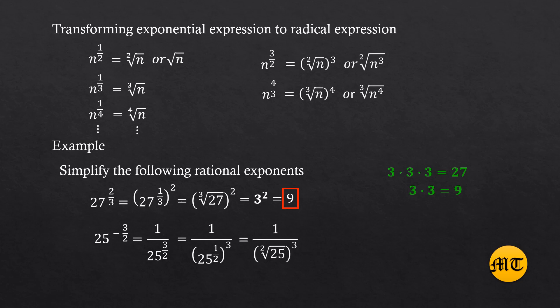Then it equals one over the square root of twenty-five, raised to three. The square root of twenty-five is five, so we have one over five raised to three. Five raised to three equals one hundred twenty-five — five times five is twenty-five, then multiplied by five equals one hundred twenty-five. Therefore, one over one hundred twenty-five is the answer.